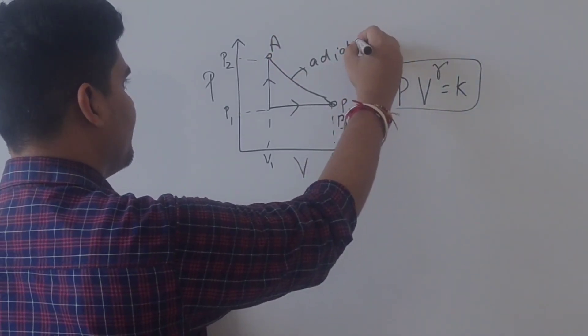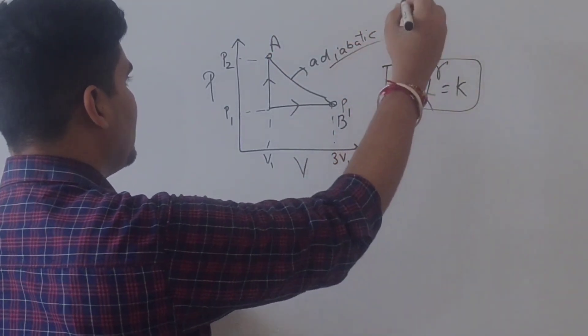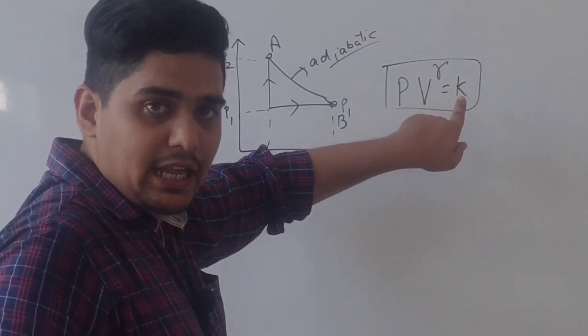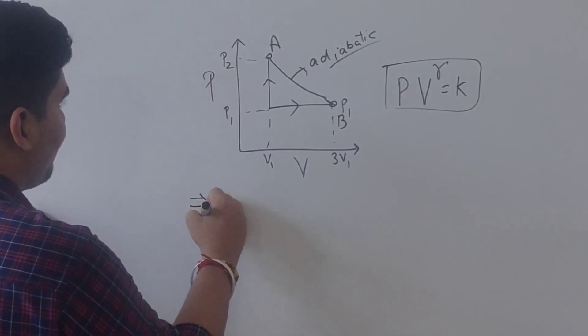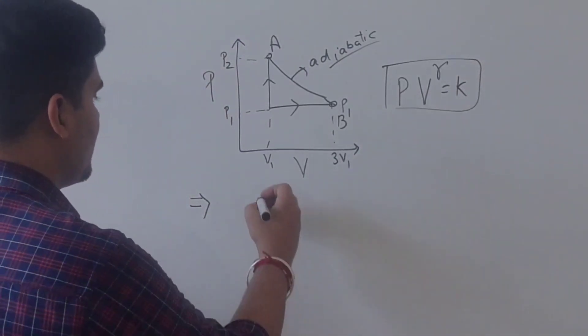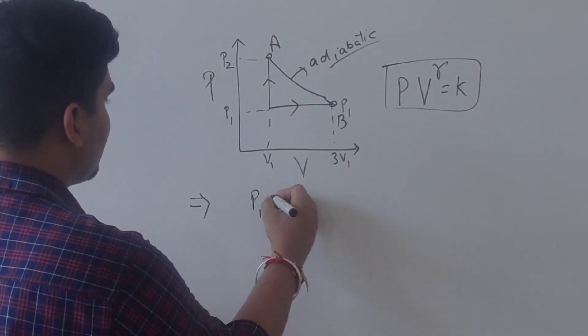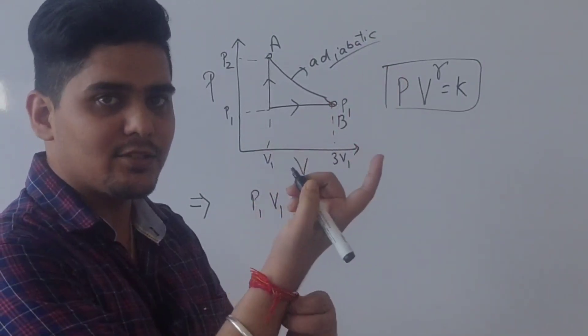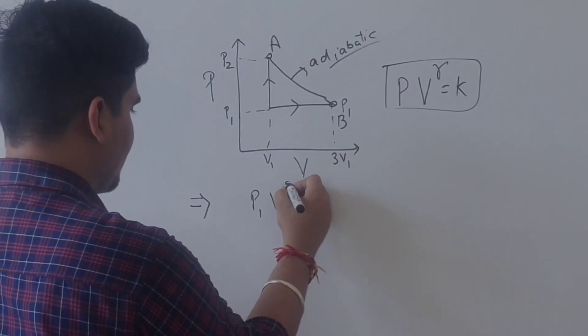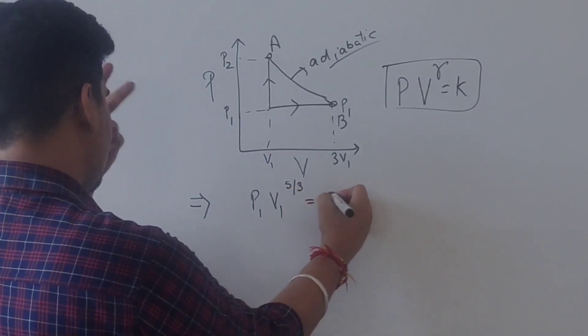Simply we can find—volume is given, so we can find P1 and P2. It's just a matter of calculation now, okay. So what we can do: P1 V1 to the power gamma. Now it is monoatomic, so gamma is 5 by 3, and this equals P2.